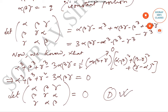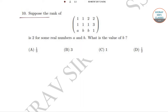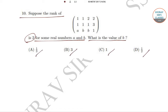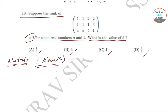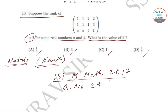Let's move on to question number ten. In this question, it is given that the rank of the matrix with entries 1,1,2; 2,1,1; 1,3,a,b; b,1 is two, for some real numbers a and b. We need to find the value of b. The options given are 1/3, 3, 1, and 1/2. This same question appeared in the ISI M.Math 2017 question paper as question number 29, and we have solved it in a separate video — you can watch that video for the full solution.